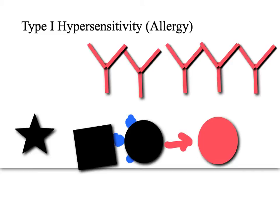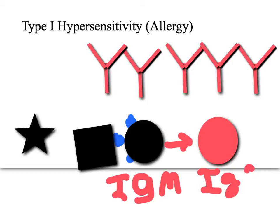In a normal reaction, the plasma cell would start by making IgM and then IgG antibodies. However, in an allergic reaction, for whatever reason through many proposed mechanisms, the plasma cell makes IgE.